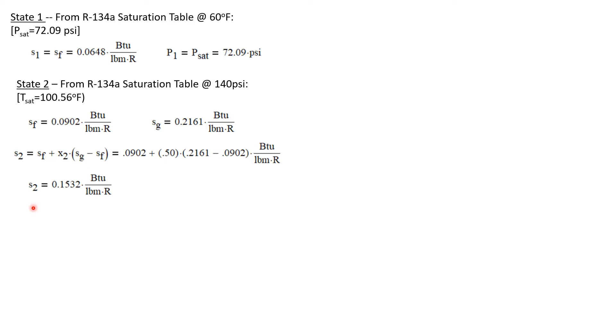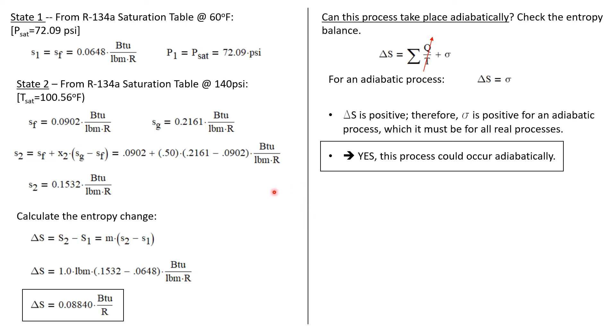Now we can calculate the entropy change. The change is s₂ minus s₁, which is the mass times the change in specific entropy. Well we were given that the mass is one pound mass and we just got values of s₂ and s₁ from the tables, and we calculate that the change in entropy during this process is 0.0884 Btu/°R.